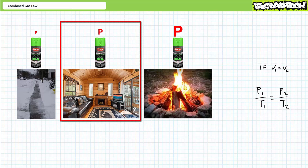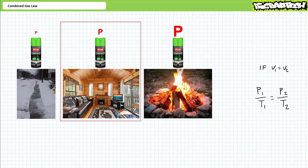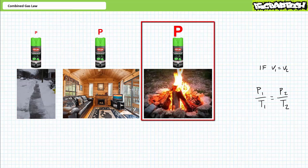Consider the can in the house as state one with a certain P1 and T1. We left an identical can outside and decreased the temperature — T2 goes down. Given P1 over T1 must equal P2 over T2, if T2 goes down, P2 must also go down. That makes sense. If we toss the identical can into a campfire and increase the temperature, T2 goes up, so P2 must also go up.